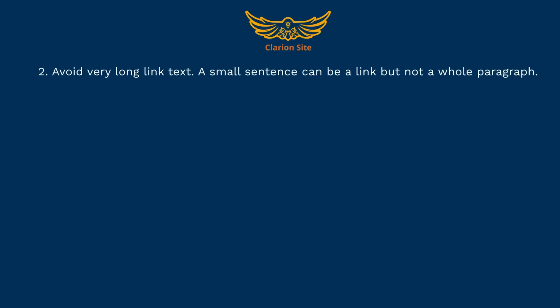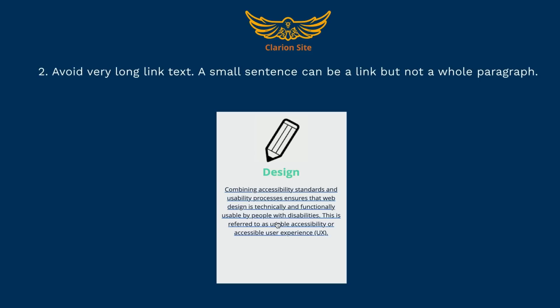Guideline 2: Avoid very long link text. A small sentence can be a link, but not a whole paragraph. In this example, the whole paragraph for the design section is a link. It won't be easy to understand the link's purpose for screen reader users. Instead of making the whole paragraph a link, add a separate link like "read more about design."